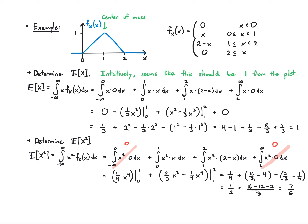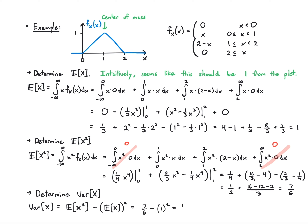Finally, let's calculate the variance. Having the second moment E[X²] = 7/6 simplifies this considerably. Using the formula Var(X) = E[X²] minus (E[X])², I take seven sixths minus one squared, which gives one sixth. I don't need to redo any integrals since I've already worked out both terms needed for this alternate formula.